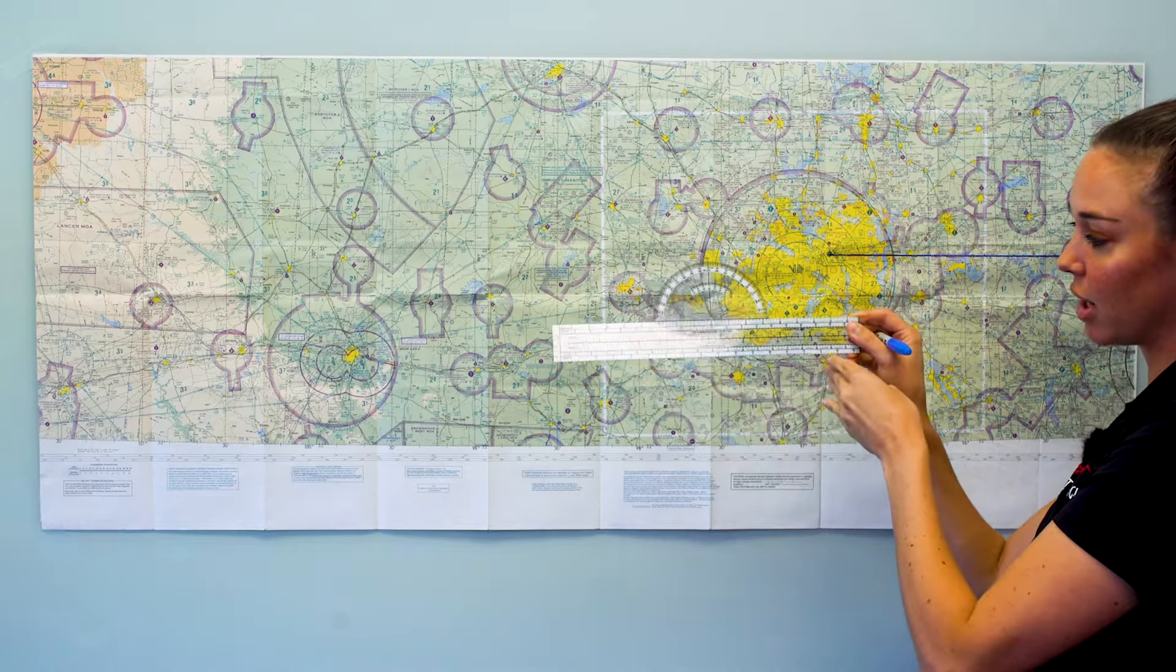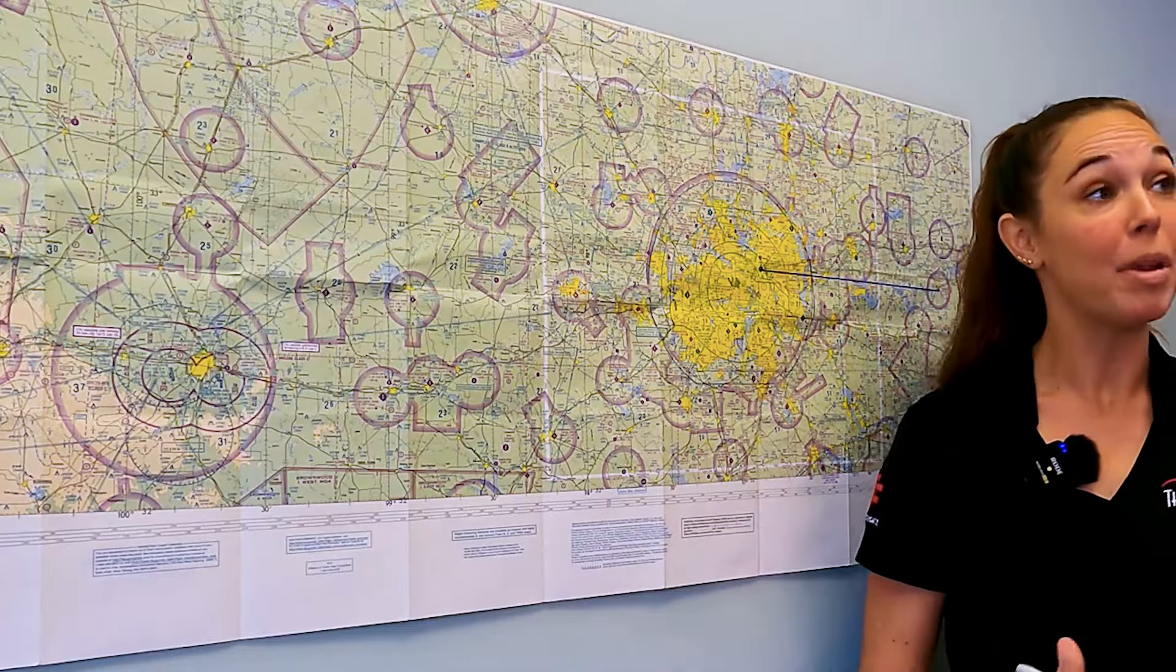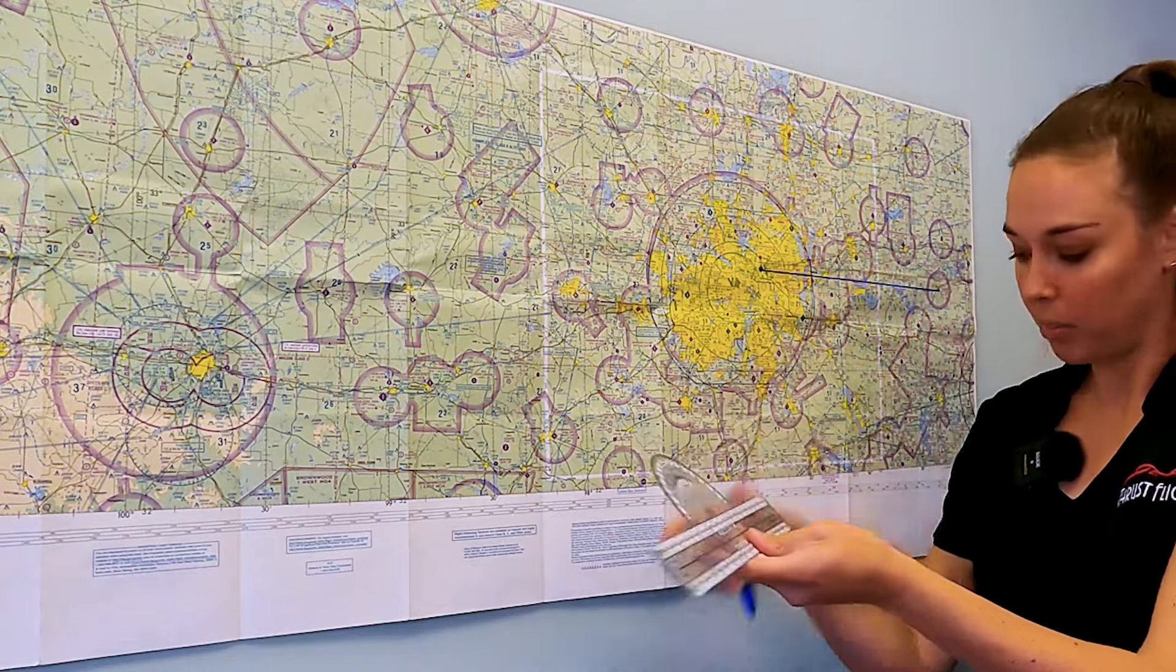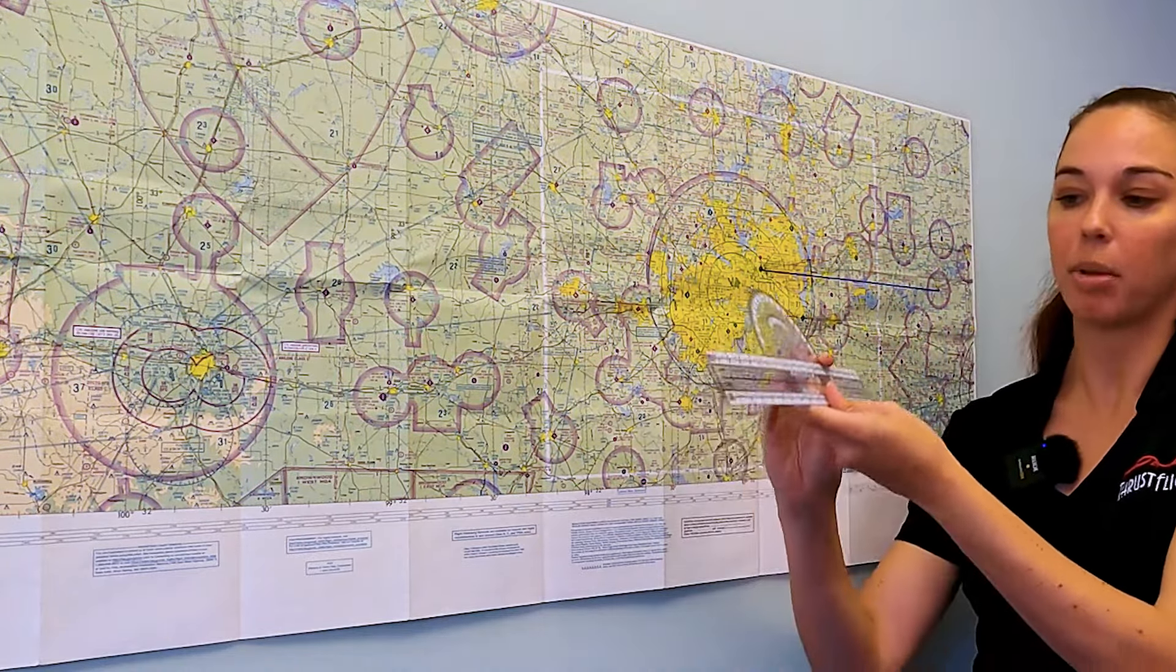So that's the first use for this is I've got a straight edge ruler. If we wanted to know how many miles this flight path would be, I can use the bottom ruler portion of my plotter to figure that out. So you want to be really careful here.